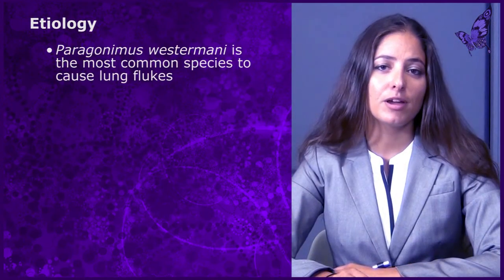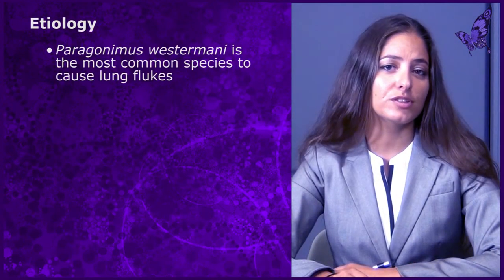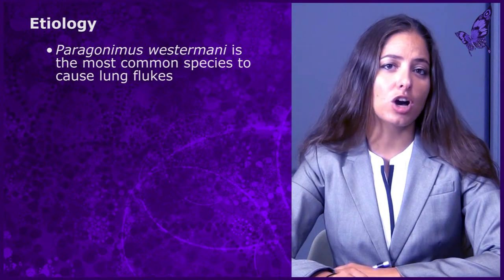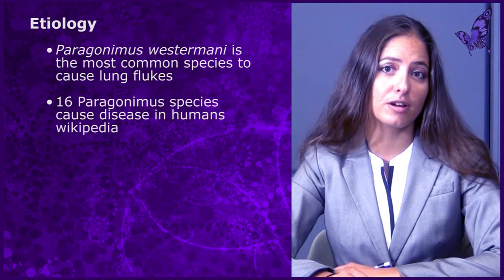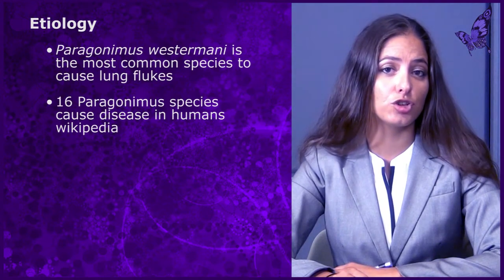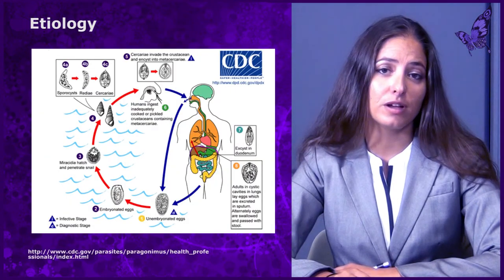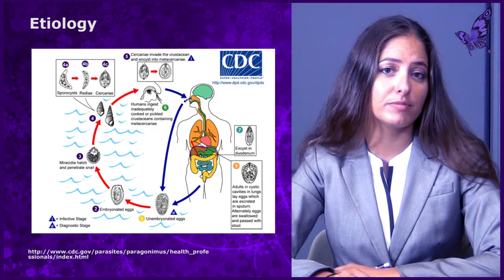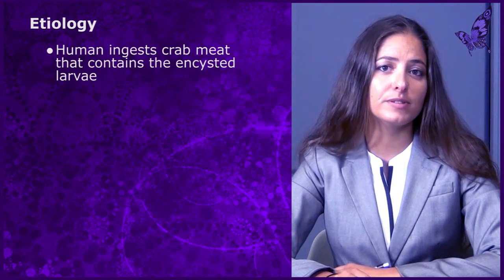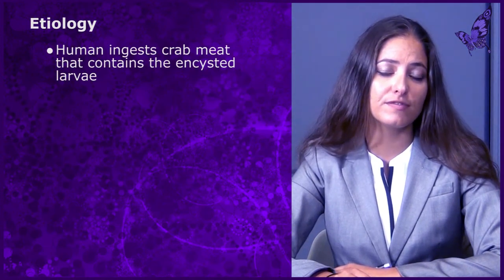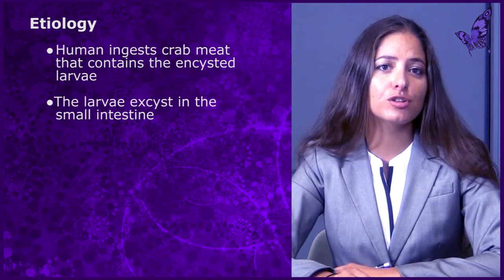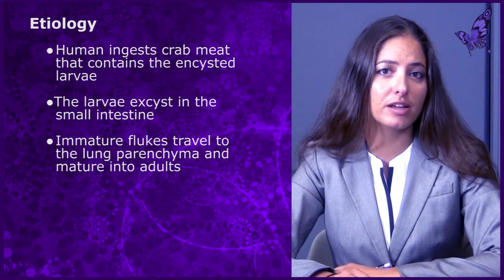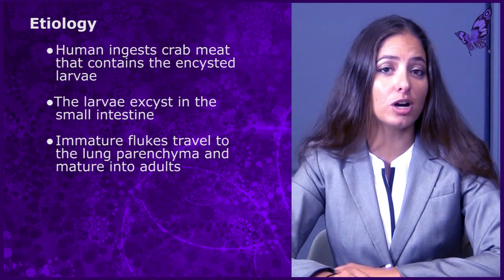Let's begin with the etiology. Paragonimus westermani is the most common cause of lung flukes, though there are 16 species of Paragonimus that can cause disease in humans. The life cycle of lung flukes is intricate and complex. Infection begins when humans ingest infected crab meat. The larvae hatch in the small intestine of the human, and the immature flukes travel to the lung parenchyma where they mature into adults.